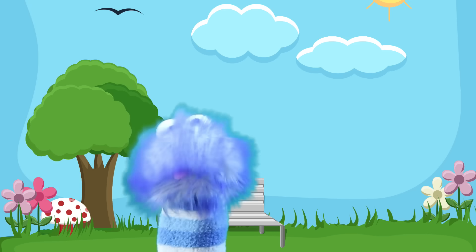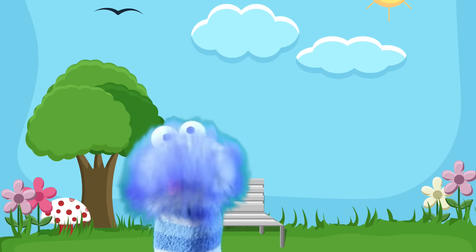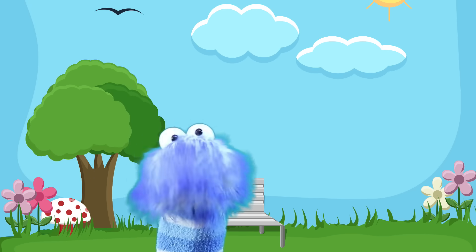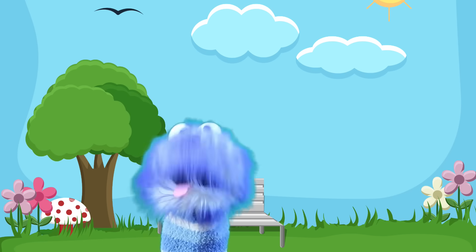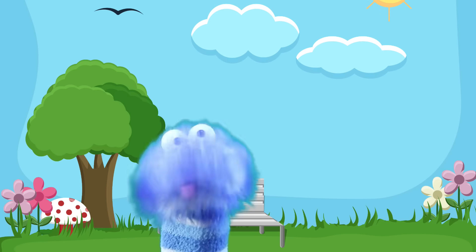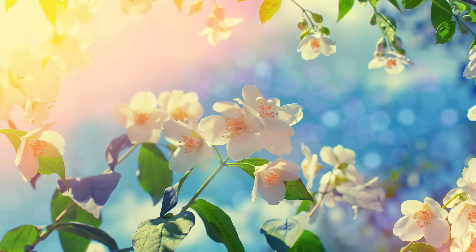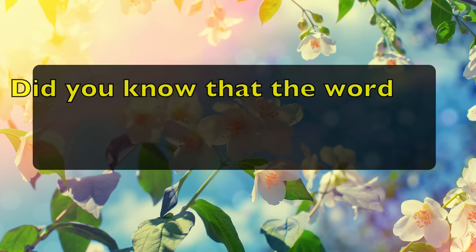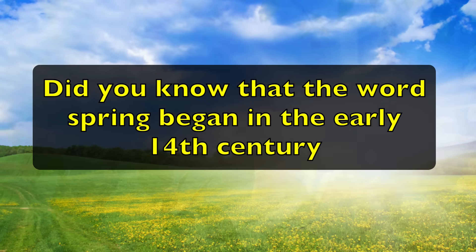The three warmest months are during summer. The coldest months are winter. And the seasons in the middle, where it's a little warm but can also be a bit colder, are spring and autumn. Did you know that the word spring began in the early 14th century? Wow, that word's been around a long time.